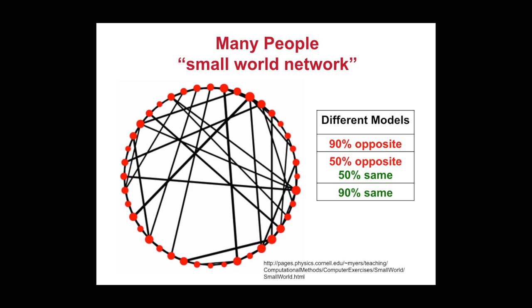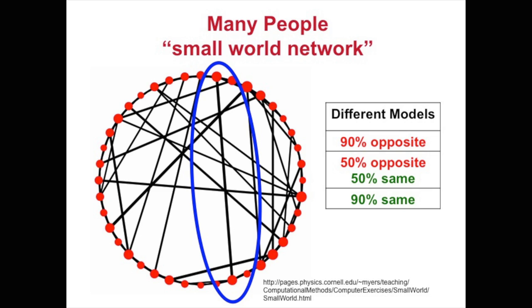Well, the world consists of a lot more than two people. So we've been making models of many people interacting in what's called a small world network. The people here are represented by red dots, linked to other people by black lines — locally, that would mean people in their neighborhood or in the office where they work. But people also have long-distance connections to people in other cities or other companies.